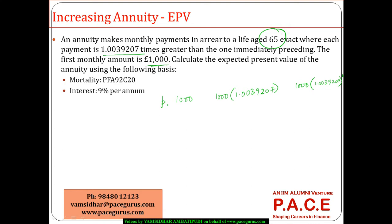Initially the life is 65. So assuming that the life has survived for 1 by 12 years, this is the payment. And here also assuming that the life has survived for 2 by 12 years, this is the payment. For 3 by 12 years, this is the payment. And this entire thing has to be discounted.